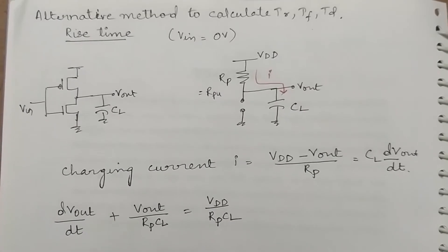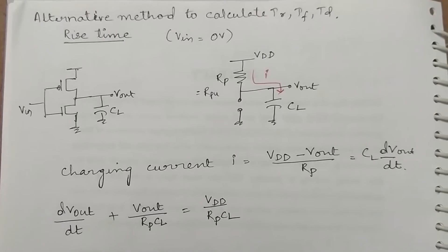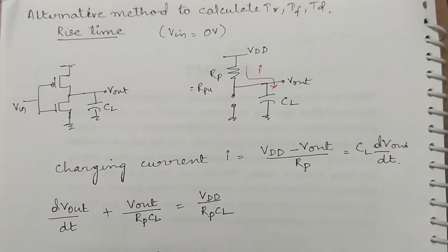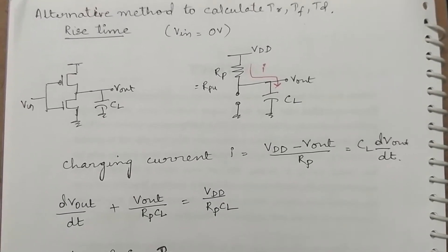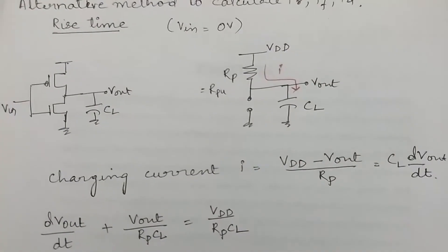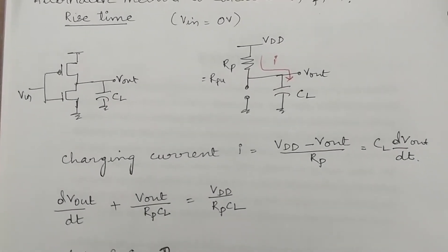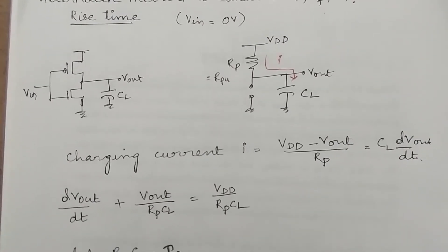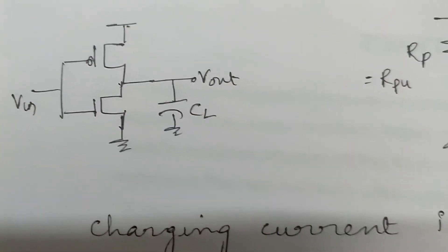First, let us consider rise time. The definition of rise time is the time taken for the output signal to rise from 0.1 to 0.9 VDD — in other words, the change in the output voltage from 10% to 90% of the maximum output voltage in this particular interval.